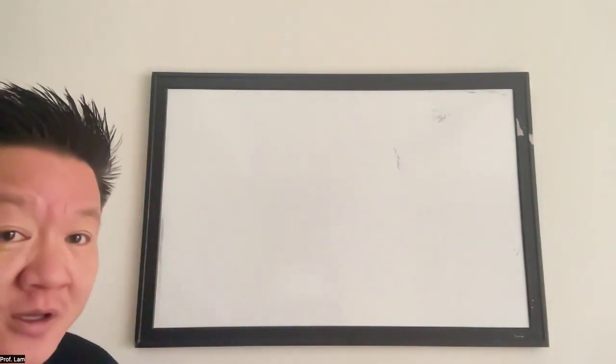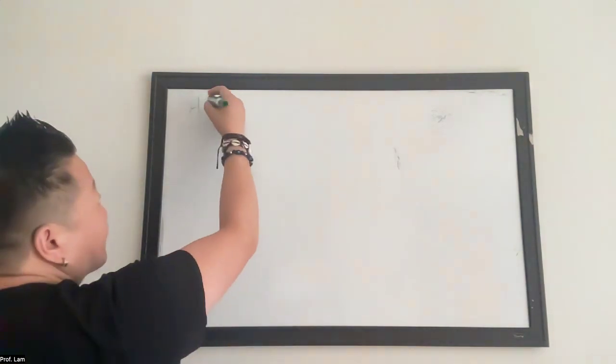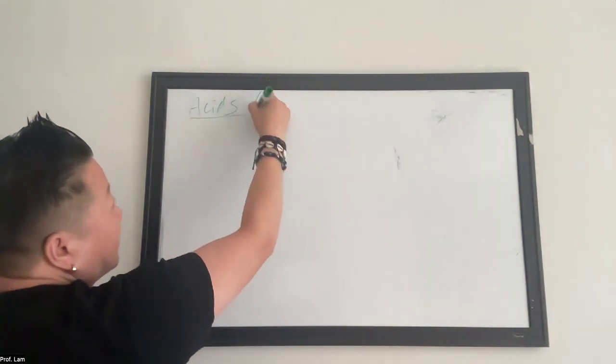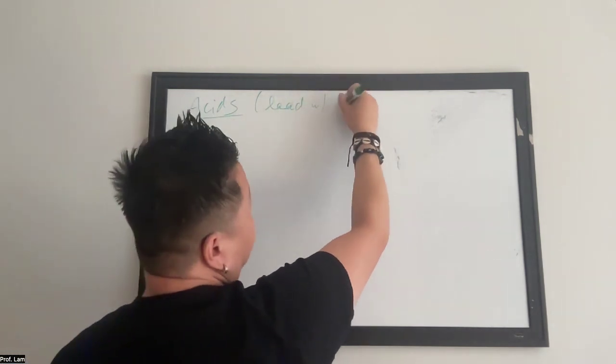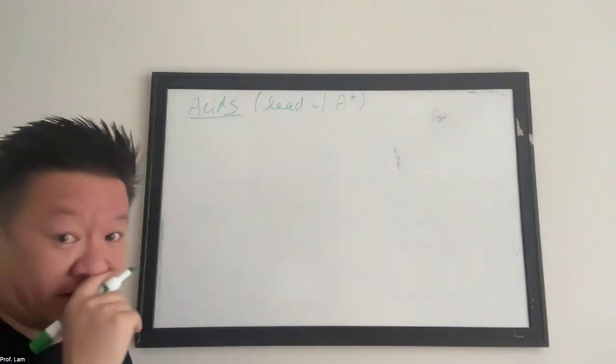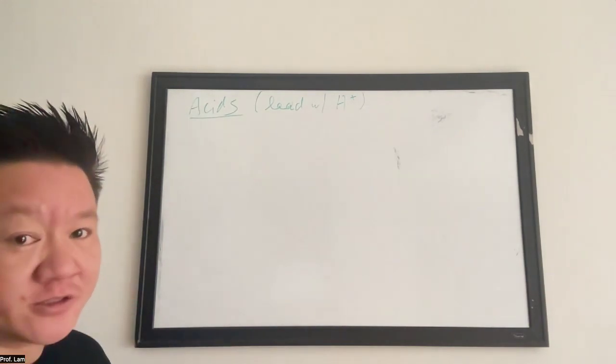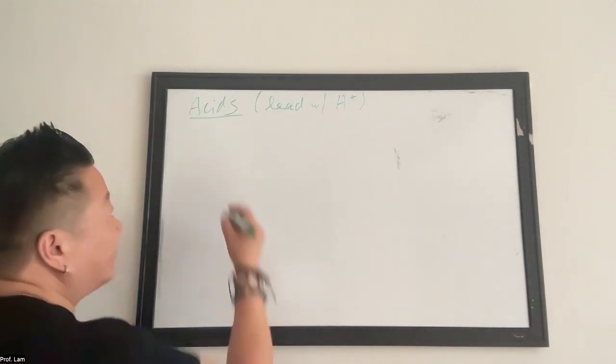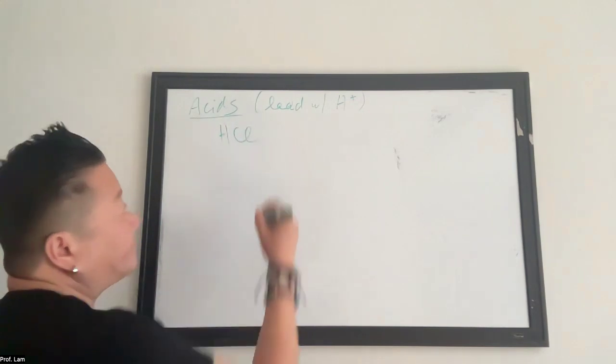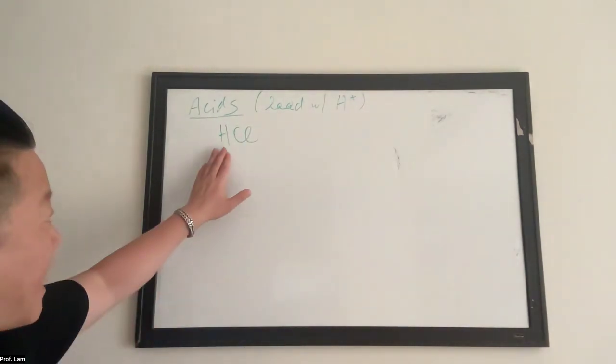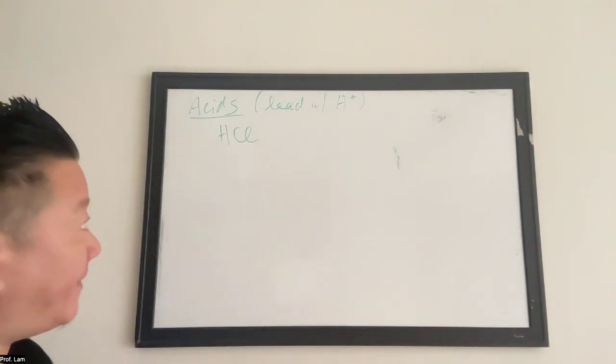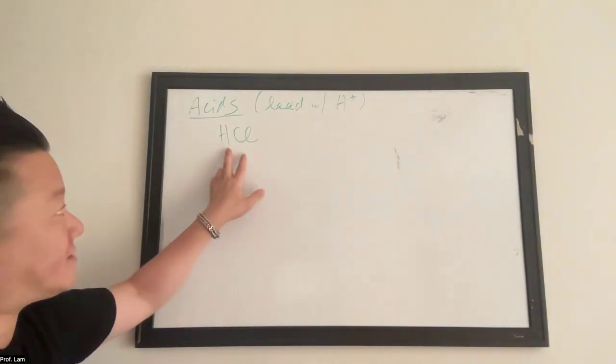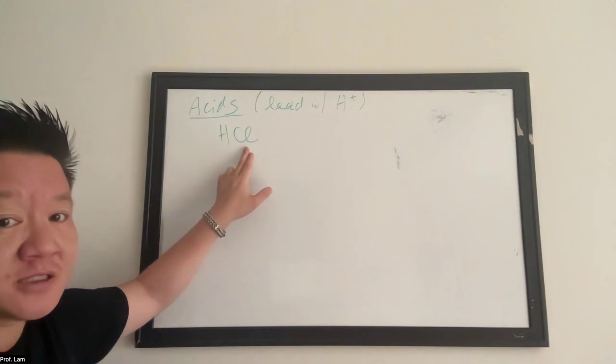So let's just do a quick review on what acid is. Remember for acids, a formula will always lead with the proton, right? So it leads with H. Something like H2SO4, or HCl. It's always that proton in front. So the Cl is actually Cl minus, so it's neutral, H plus and Cl minus.